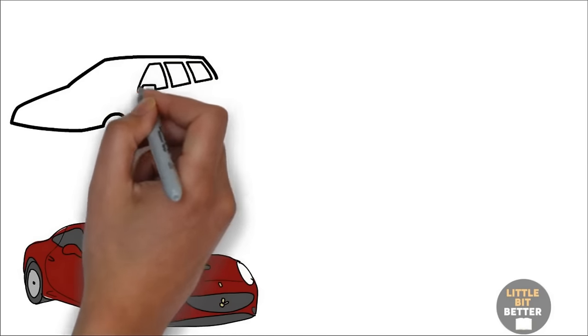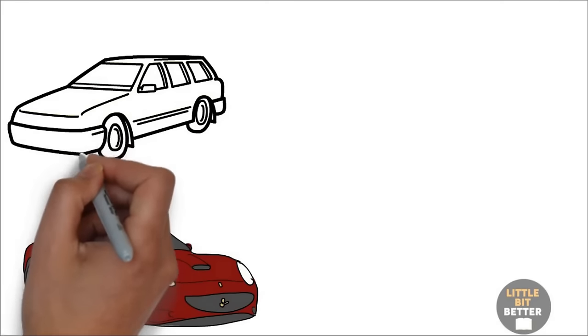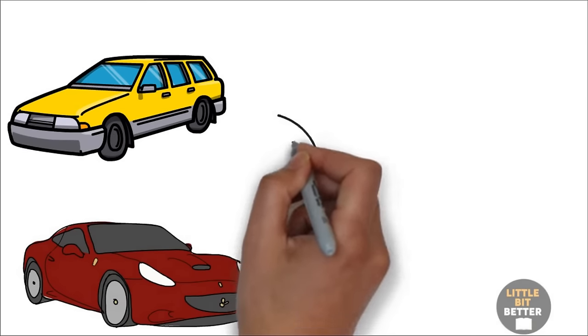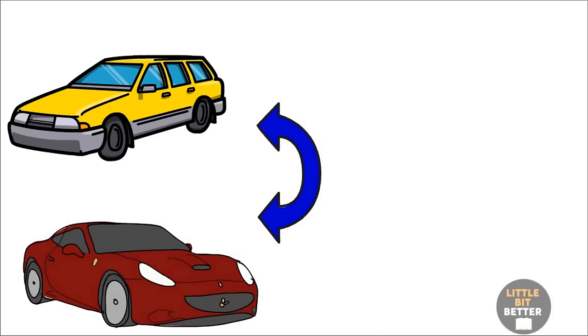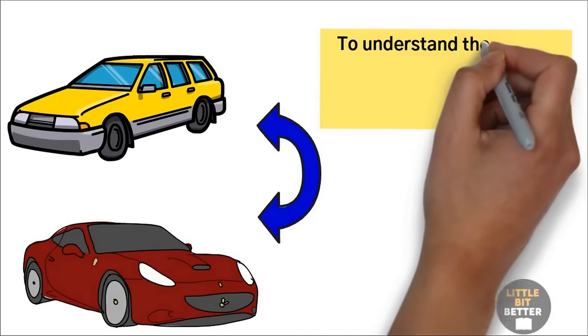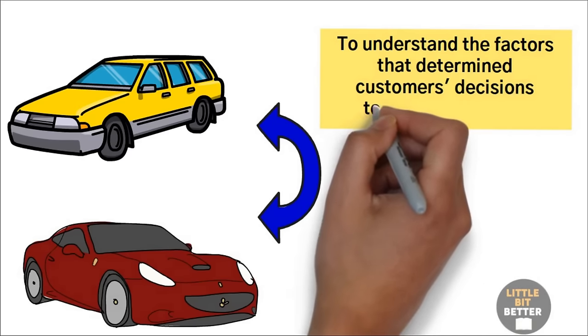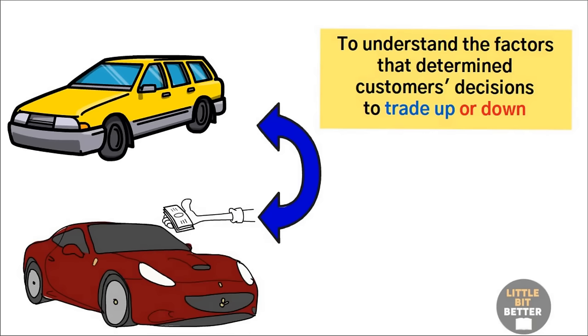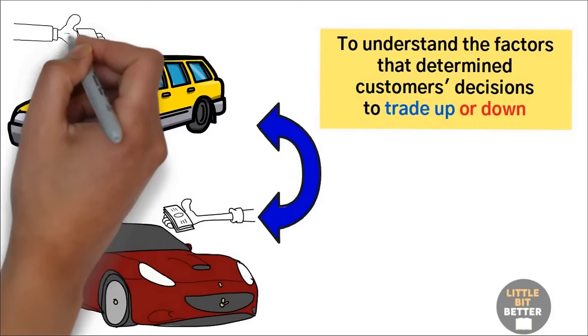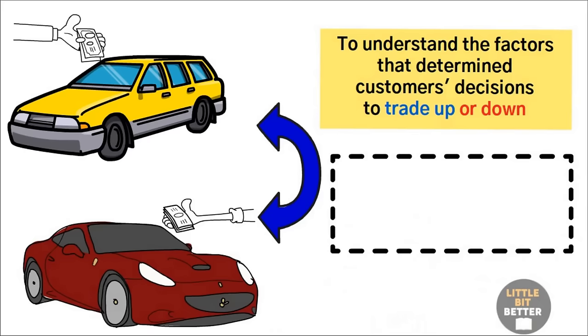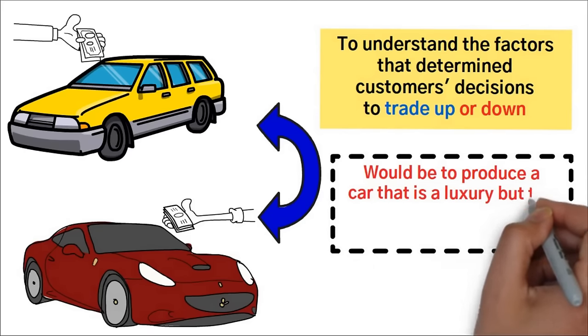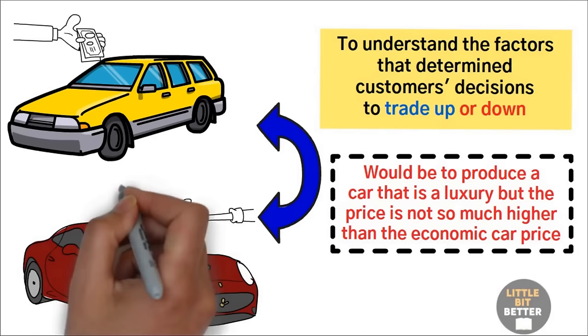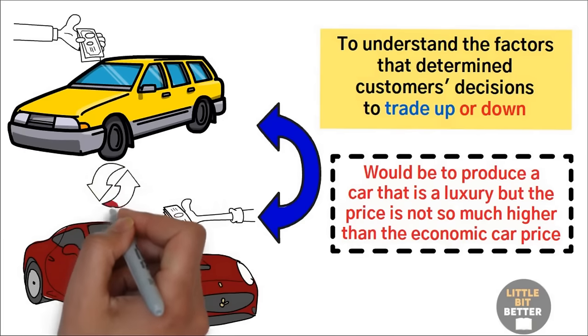Thinking that luxury car buyers wouldn't be interested in economic cars and vice versa. But the truth is that customers can trade up and buy more expensive options, or trade down and buy cheaper options. You only need to understand the factors that determine customers' decisions to trade up or down. For example, people who buy expensive cars are interested in luxury. On the other hand, people who buy economic cars are concerned about the price. The blue ocean strategy would be to produce a car that is a luxury, but the price is not so much higher than the economic car price. This way, the economic car buyers can trade up and luxury car buyers can trade down.